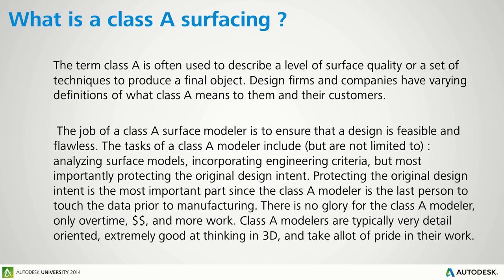The term Class A is often used to describe levels of surface quality or techniques used to produce objects. All kinds of companies have their own definitions of what Class A surfacing is, the tolerances they need to work to, and what level of quality is acceptable. So there isn't one set of rules for Class A surfacing — it varies by job, it varies by company.